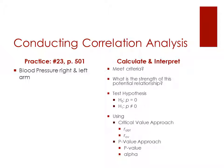Okay, let's take another look at conducting some correlation analysis. Now we're going to use practice problem number 23 on page 501, where you're looking at the blood pressure between the right and the left arm. So let's take through the steps of going through and conducting an analysis and an interpretation for this data.